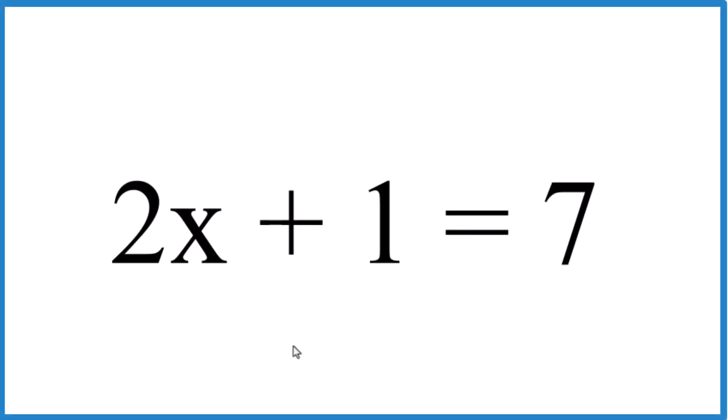I was asked to solve this equation here: 2x plus 1 equals 7, to solve this for x. So find out what the value of x would be in this equation.